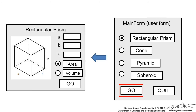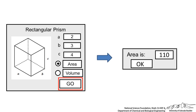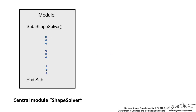When we press Go and rectangular prism is selected, we want another user form to pop up. Ideally we'd like the main form to hide while we're inputting into the second user form. We've got inputs for A, B, and C — the three lengths of the rectangular prism — and the user can select area or volume. Once the code has done the calculations, it's going to export that in an output box. We need to find the formulas for all the surface areas and volumes of those objects.